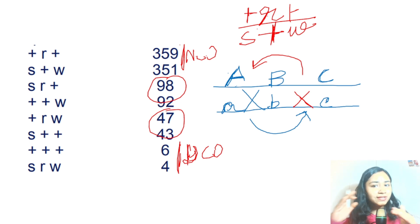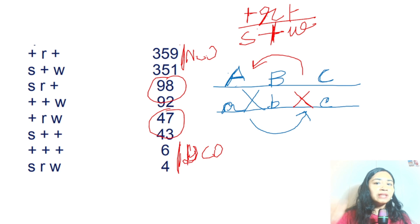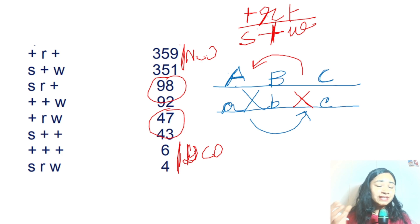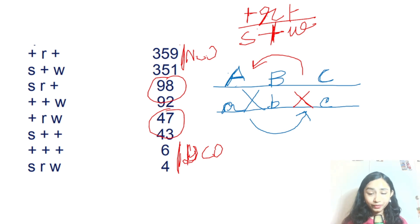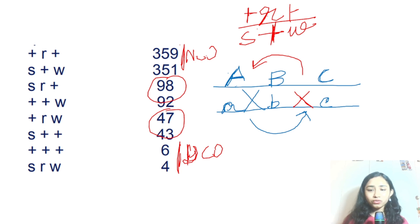Once there is a single crossover event, it inhibits or interferes with another crossing over event of the adjacent gene — this is known as interference. That is why we get the DCO percentage in the least number, because whenever there is a single crossover event it lowers the chance of the double crossover event of the adjacent gene. That is why we get so little DCO — the double crossover event is very rare.